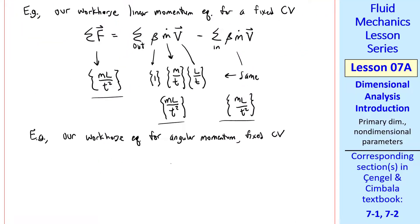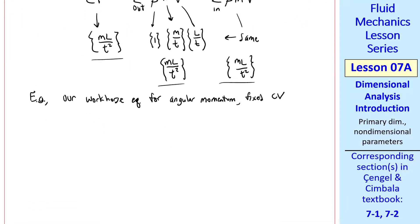Let's do another quick example. Our workhorse equation for angular momentum with a fixed control volume, the scalar version was sigma m, equals sum over the outlets r m dot v, minus sum over the inlets r m dot v.